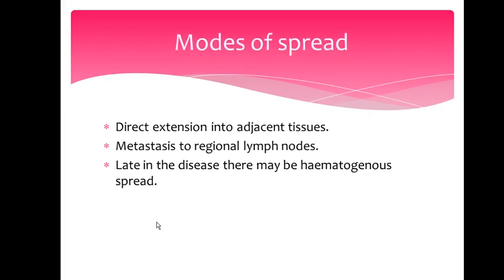Modes of spread are very important. First is direct extension into adjacent tissues. Second is metastasis to regional lymph nodes. Third, later in the disease, is hematogenous spread — meaning the cancer enters the bloodstream. So the progression is: adjacent tissue first, then regional lymph nodes, then hematogenous spread.